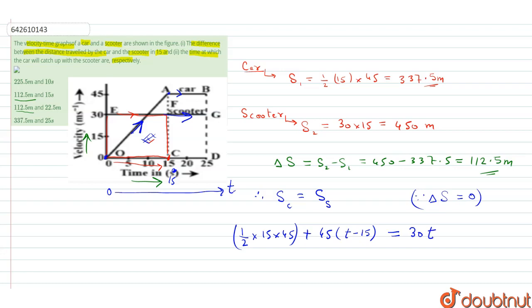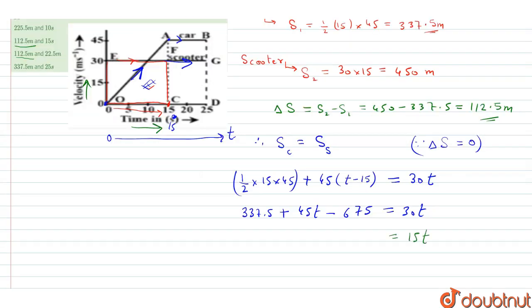Now if we find the value, it is 337.5 plus 45t minus 675 equals 30t. So 15t equals 337.5, and t equals 22.5 seconds as the result of the second part.